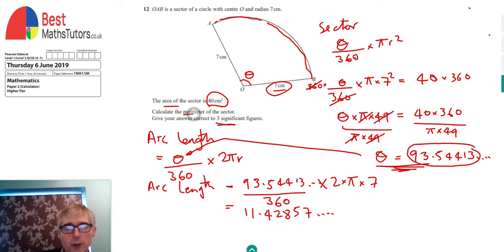We're asked to work out what the perimeter is, which means the distance all the way around the outside. As well as this curved bit which is the arc length, we've got to add on this straight length here and this straight length here. Since both of those are 7, we're adding on 14 onto this arc length to get the total perimeter.